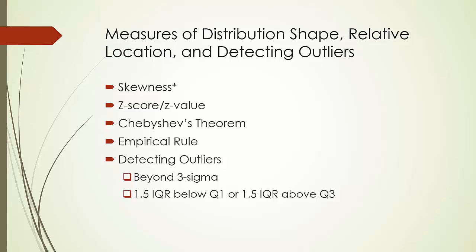The empirical rule says that for a normal distribution, approximately 68% of the data values are within 1 standard deviation of the mean, approximately 95% are within 2 standard deviations, and approximately 99.73% are within 3 standard deviations of the mean.